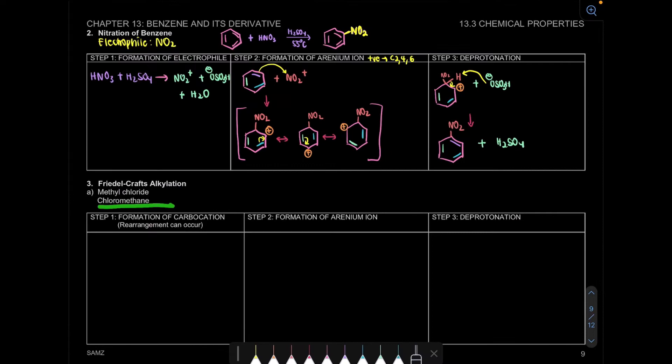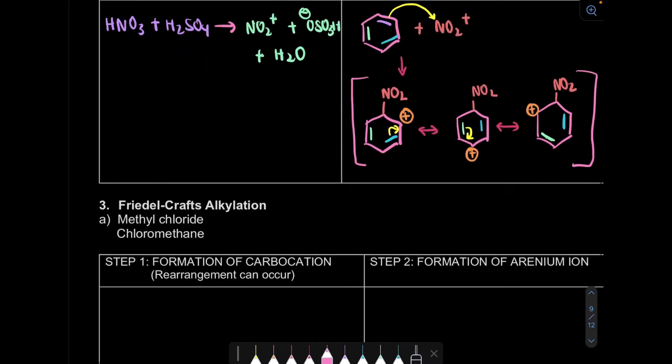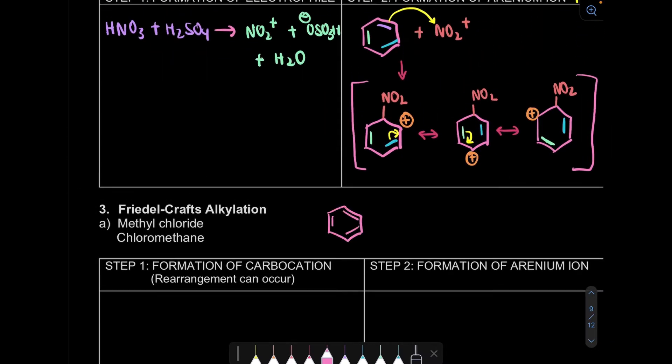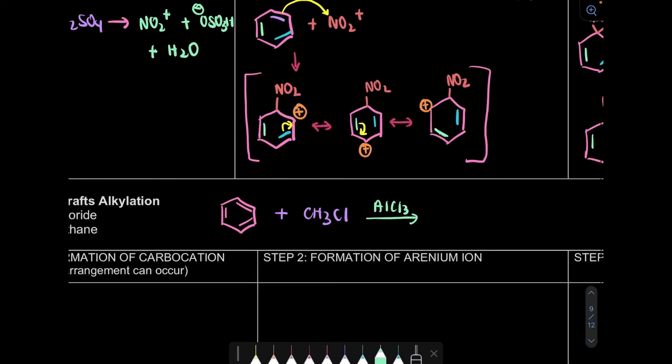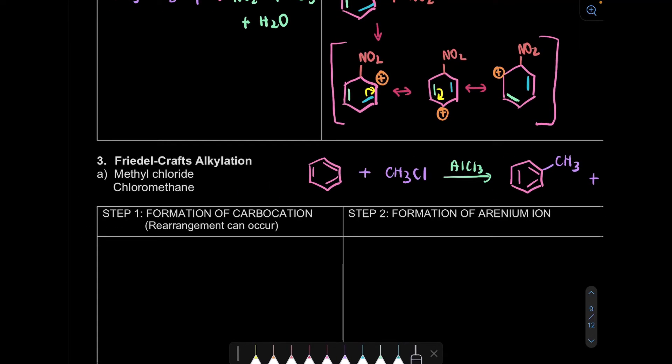Let's look for the reaction with benzene with chloromethane. So we're going to draw our benzene. Chloromethane means that we have one carbon, one of it attached to chlorine. And we also need our Lewis acid catalyst. So what happened here is the hydrogen will combine with Cl to form our by-product.